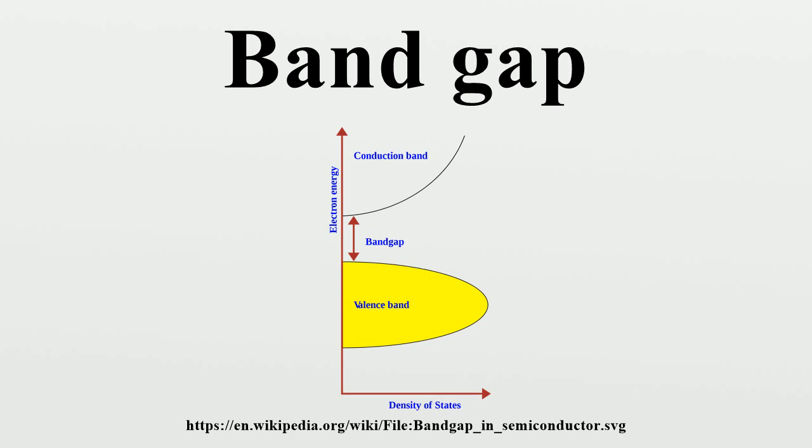Therefore, the band gap is a major factor determining the electrical conductivity of a solid. Substances with large band gaps are generally insulators, those with smaller band gaps are semiconductors, while conductors either have very small band gaps or none, because the valence and conduction bands overlap.